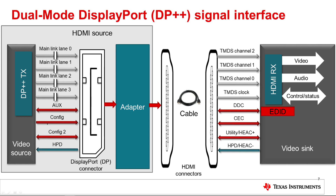DP++, or dual-mode DisplayPort, is an interface that is very similar to HDMI. A DP++ transmitter can logically output either DP or TMDS signals. DP is an AC coupled interface, while HDMI is DC coupled. To connect a DP++ TX to an HDMI sync, an adapter is needed to interface between the AC coupled DP and the DC coupled HDMI signals. An example of an adapter is a DP++ to HDMI dongle. The adapter combined with a DP++ source is essentially an HDMI source.